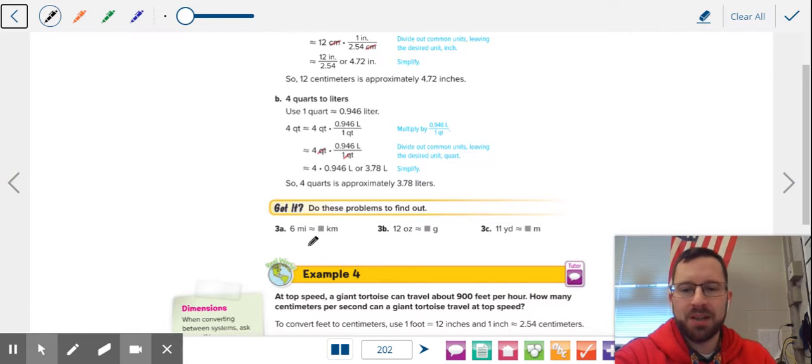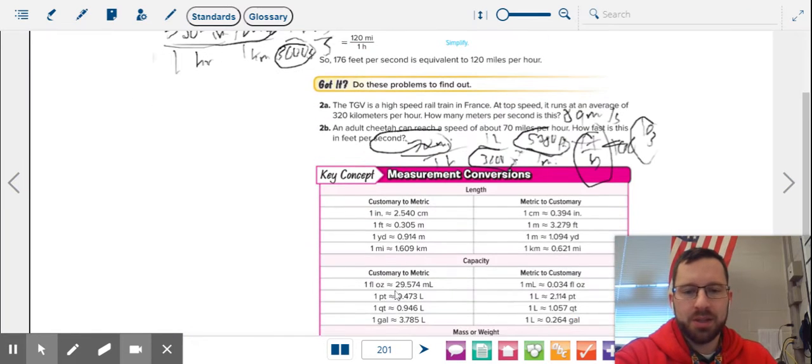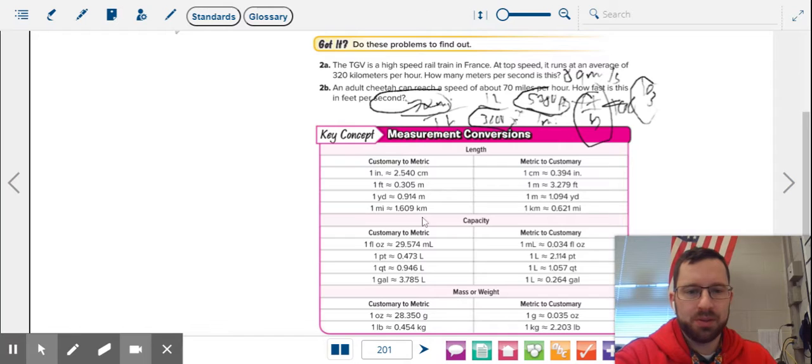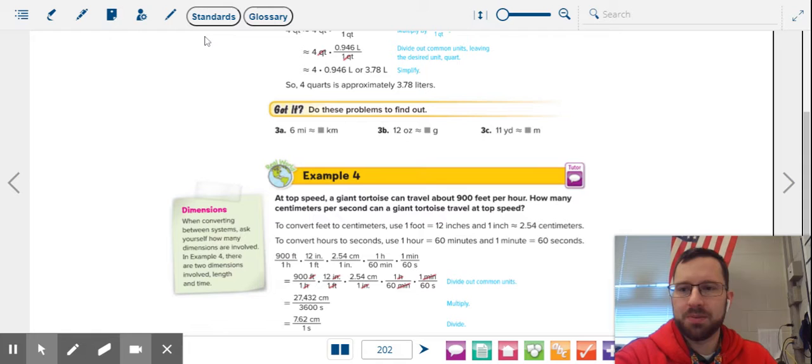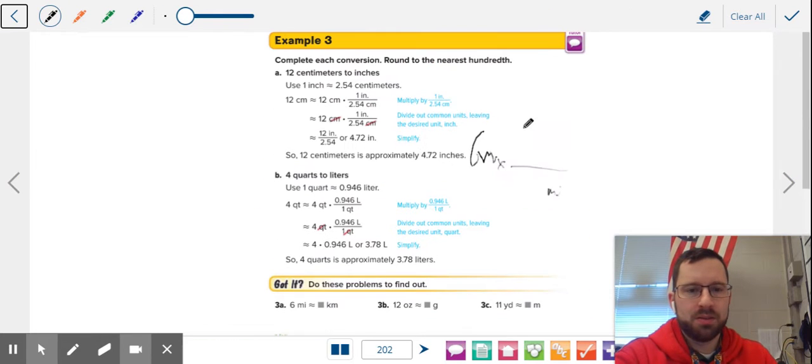So six miles is how many kilometers? What we're going to do, we're going to take six miles and multiply it. Miles are on top, so we're going to put miles on the bottom. How many kilometers are in a mile? Let's look at length, kilometers, one mile is 1.609 kilometers. So 1.609 kilometers.